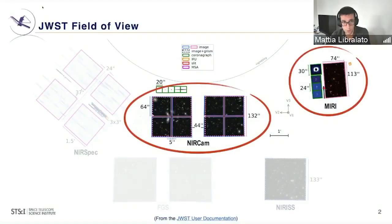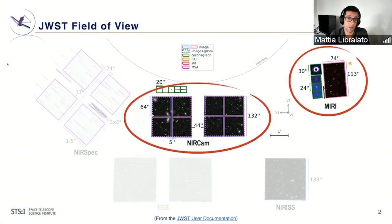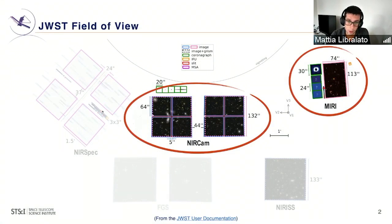Here there is a view of the JWST focal plane, where you can see various instruments that will be at disposal. Today we are going to focus on two of them used in imaging mode: NIRCam, the one you see here in the center, and the one on the top right, which is MIRI.